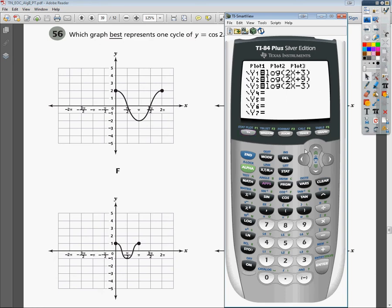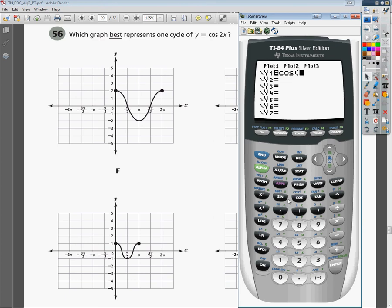So now that I have my range set up, I'm going to erase all these things from another problem in this set earlier. And then I'm just going to type in y equals cosine 2x. And I'm going to graph it.